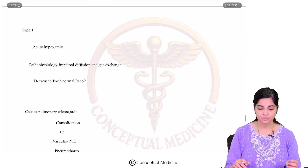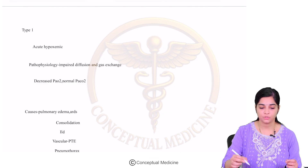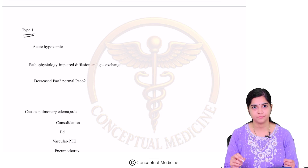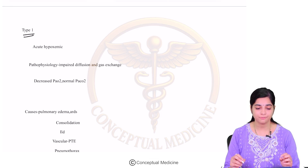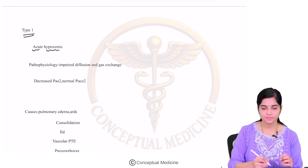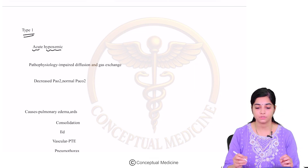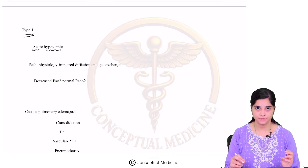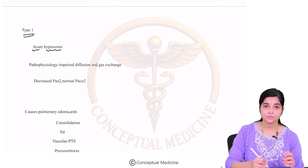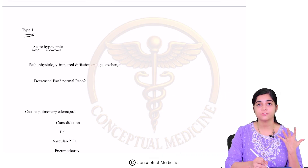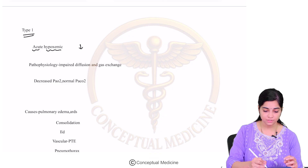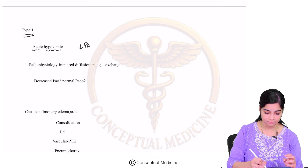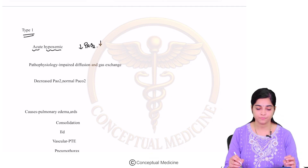So let us look at the classification of respiratory failure. The first type is called type 1 respiratory failure, which basically refers to acute hypoxemic respiratory failure. This means the concentration of oxygen in the blood is reduced — the partial pressure of oxygen in the arteries, PaO2, is reduced.